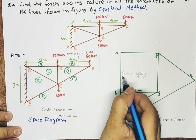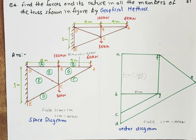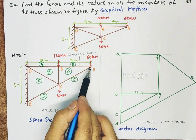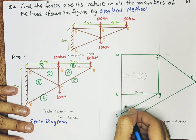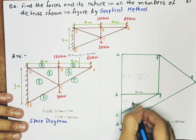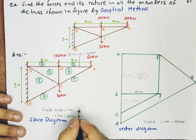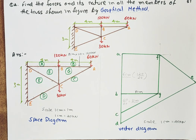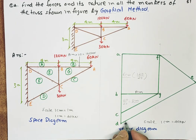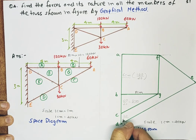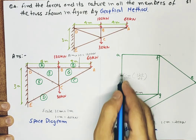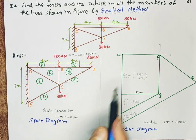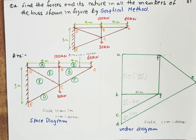In a similar way, going from B to C, there is a 60 kilonewton force facing downwards, so 60 divided by 20 gives 3 centimeter for B to C. When we go from C to D, there is another force of 30 kilonewton downwards, so 30 divided by 20 gives 1.5 centimeter. So the line A, B, C, and D is drawn in the vector diagram.